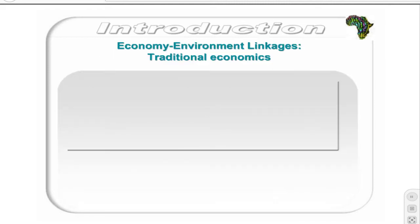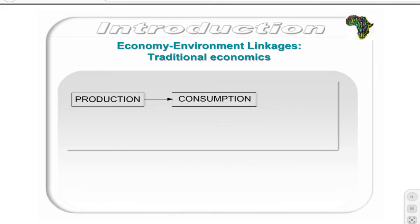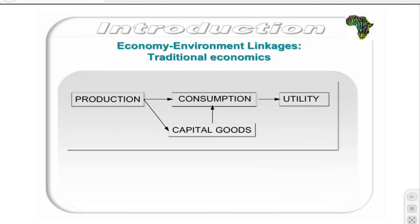Before we see how the economy relates to the environment, let's consider the linkages within a traditional economy. An economy consists of producers or firms and consumers. Firms produce consumption goods, such as soft drinks and paper, and capital goods, such as scanning machines and chainsaws. Consumption goods are consumed directly and provide utility to consumers, whereas capital goods are used to produce consumer goods and thus represent future consumption. The environment was considered as an infinite resource and was not seen as being a limiting factor on the growth of the economy.